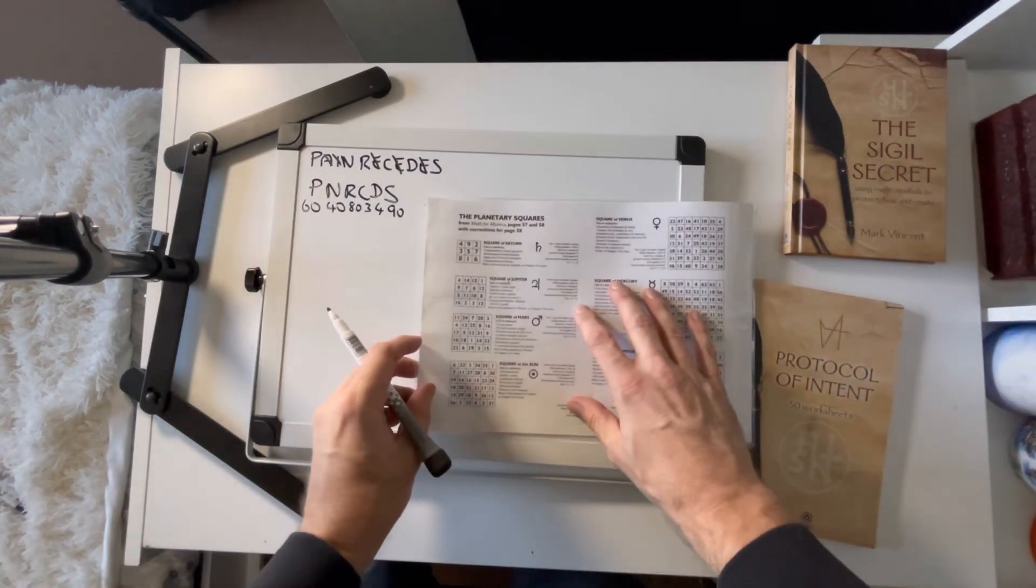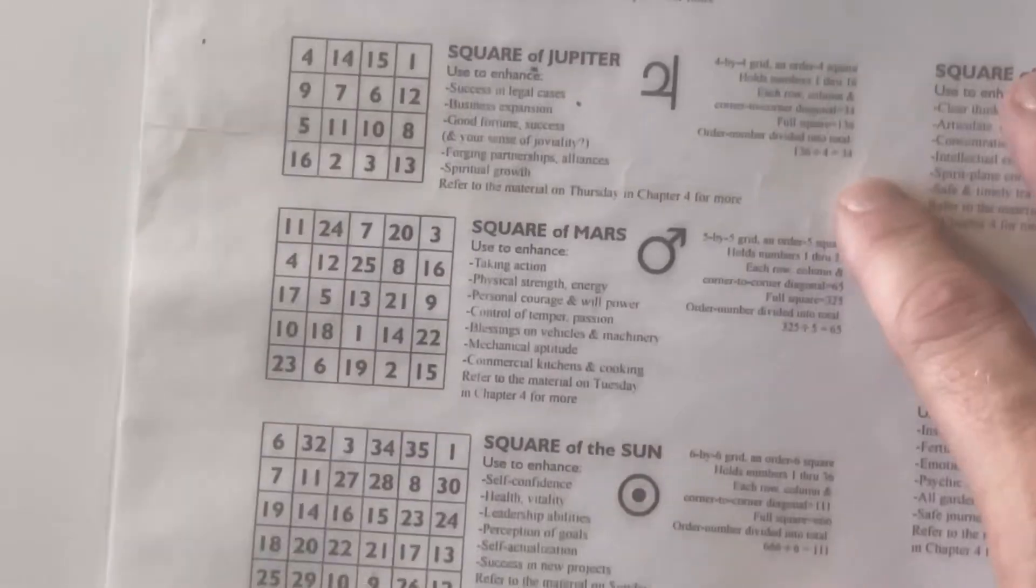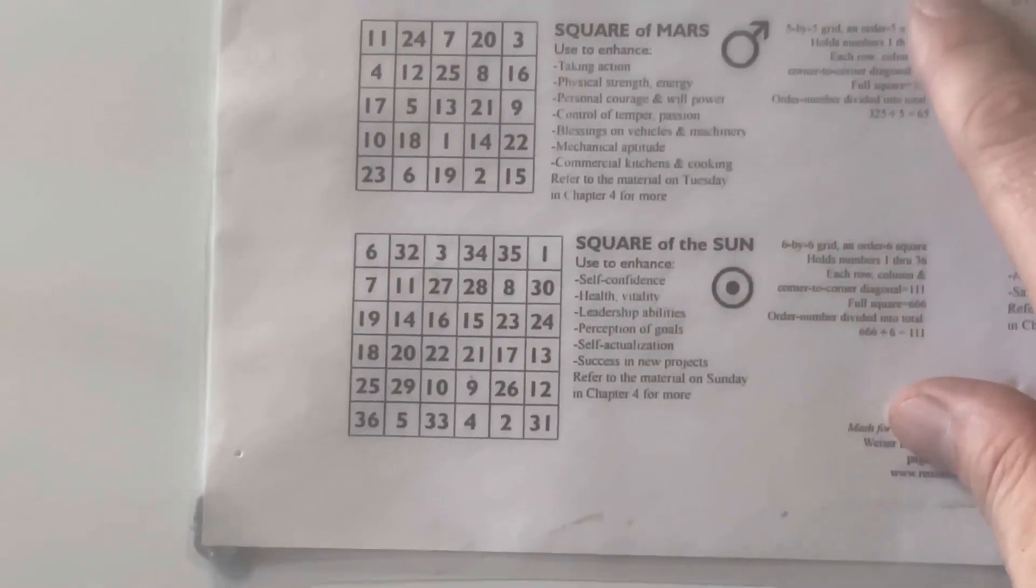I'm going to zoom in on the square of the sun, then draw a sigil on here and transfer it across. We've got some larger numbers going on here and they may be too high. We'll see what happens.